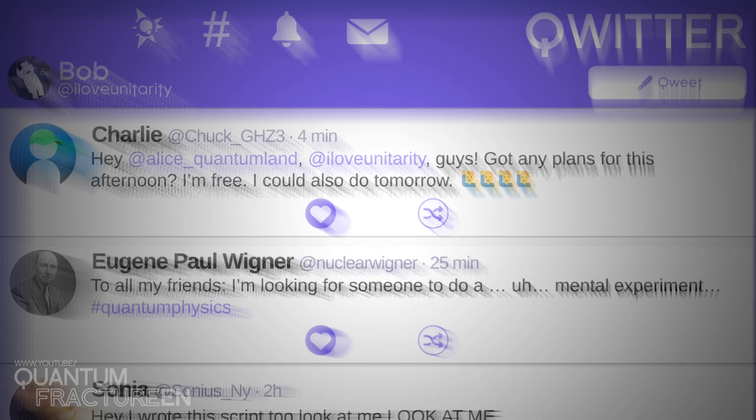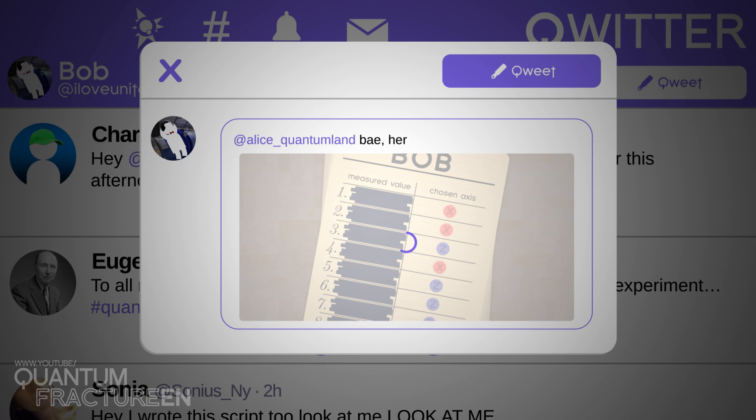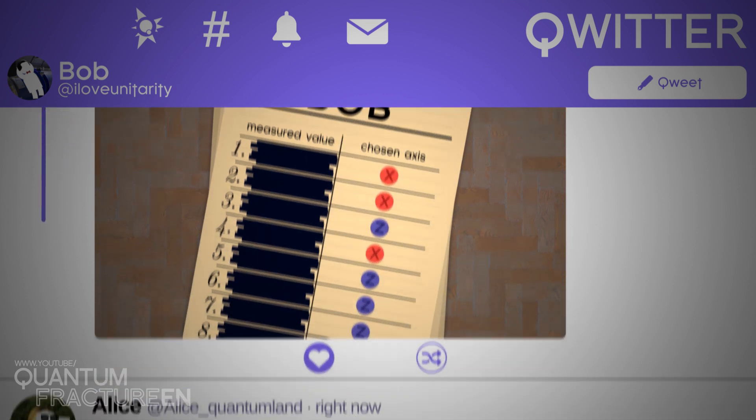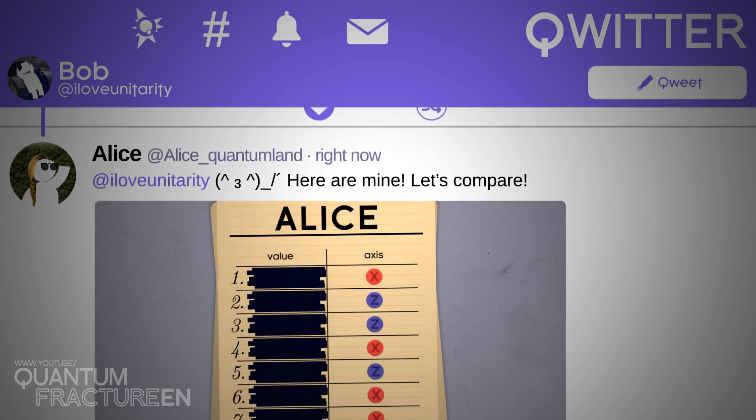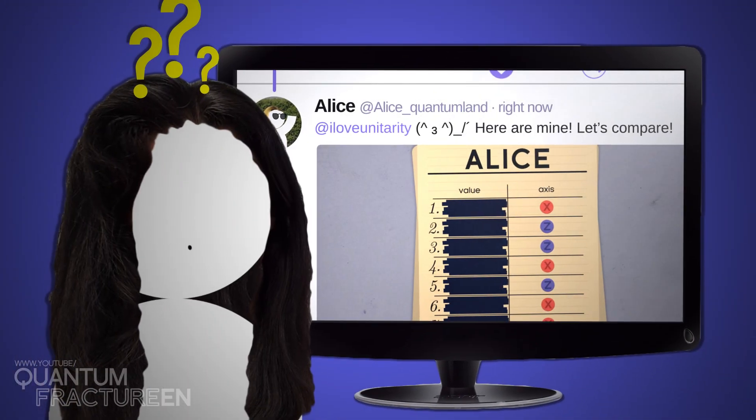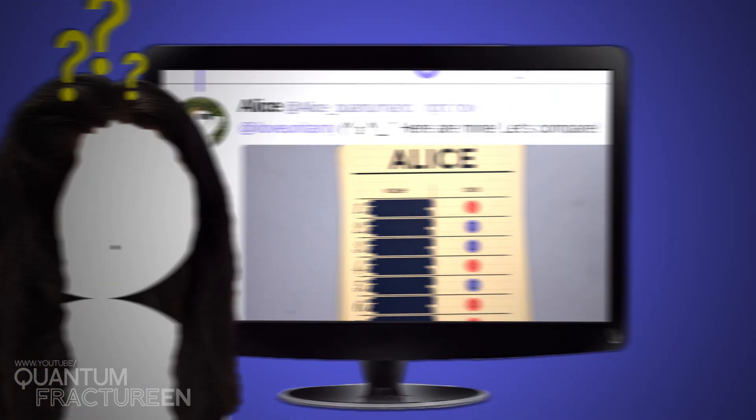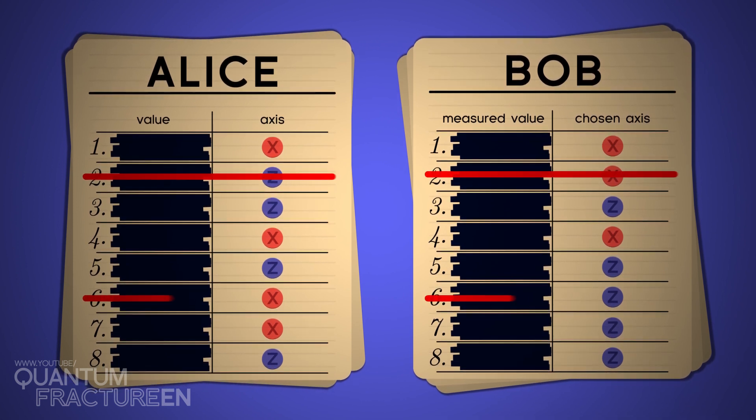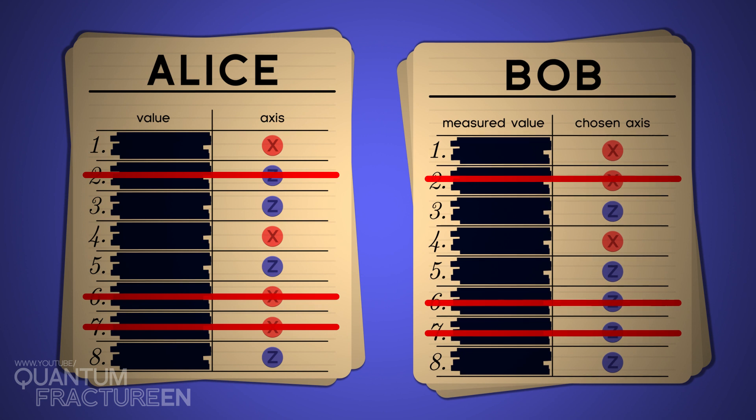When he's finished, Bob takes the axes on which he measured Alice's qubits and posts them publicly. But only the axes, the results of each qubit are kept confidential. When she sees this, Alice does the same. She takes only the axes on which she prepared each qubit and posts them. Eve sees these posts but doesn't really get what they're doing. The protocol continues.